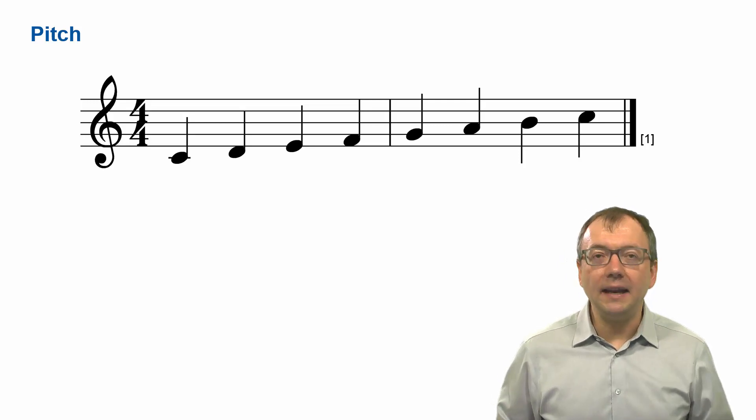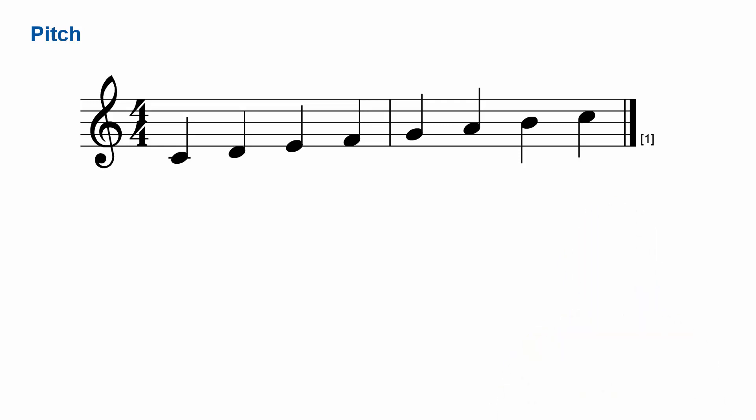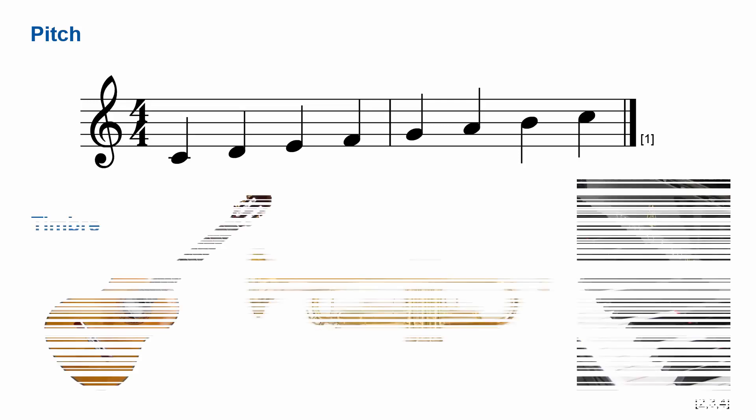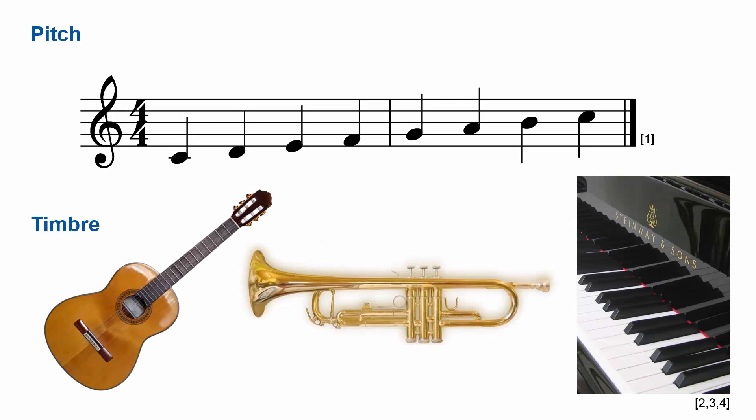Now, that discriminates pitch from timbre, where timbre is the quality of sounds that are equally loud and have the same pitch — like sounds produced by different instruments that are equally loud and have the same pitch, but still sound different. That difference is what we term timbre.